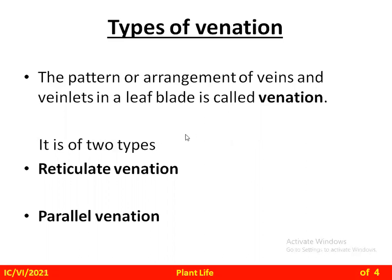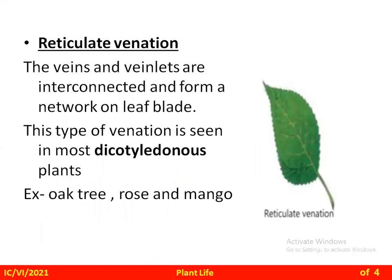Venation is of two types: the first is reticulate venation and the second is parallel venation. In reticulate venation, the veins and veinlets are interconnected and form a network on the leaf blade. This type of venation is seen in most dicotyledon plants. You can see in the picture the midrib which branches into veins, and veins which again branch into veinlets, forming a network.